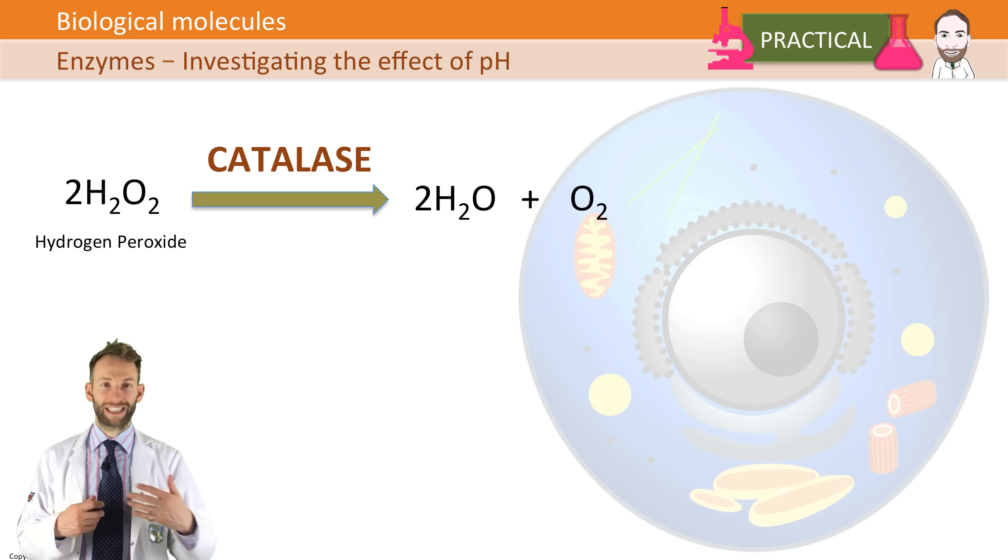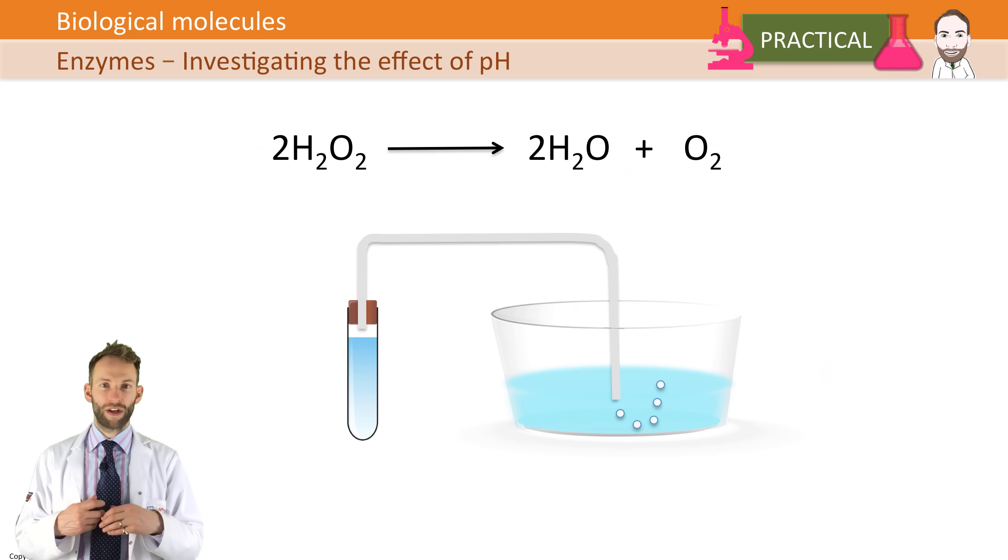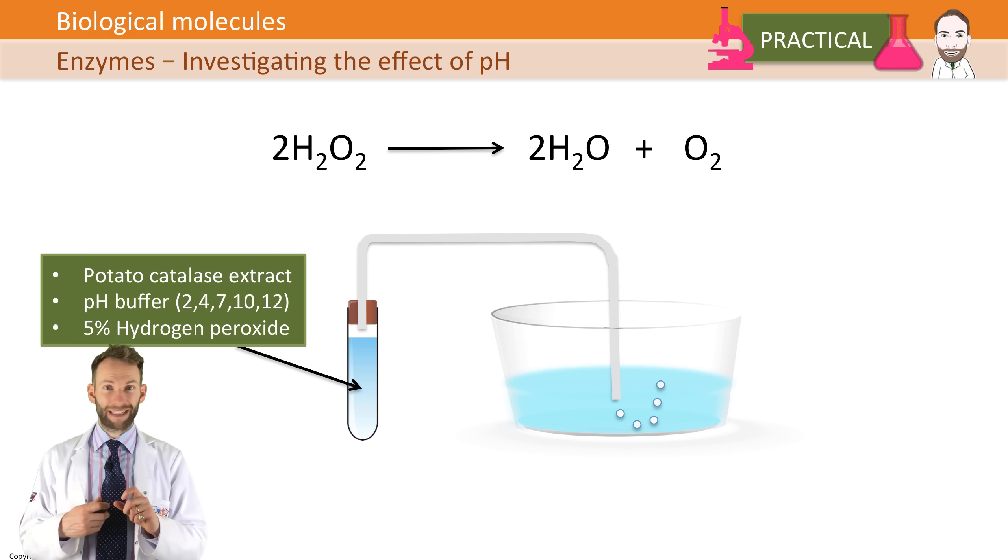What we can do is we can actually measure the rate at which oxygen is given off when we use catalase to break down hydrogen peroxide. All we've got to do is set up an experiment where you've got in a test tube the buffer solution of whatever pH you want - 2, 4, 7, 10, or 12, for example - some hydrogen peroxide, and then add some catalase.